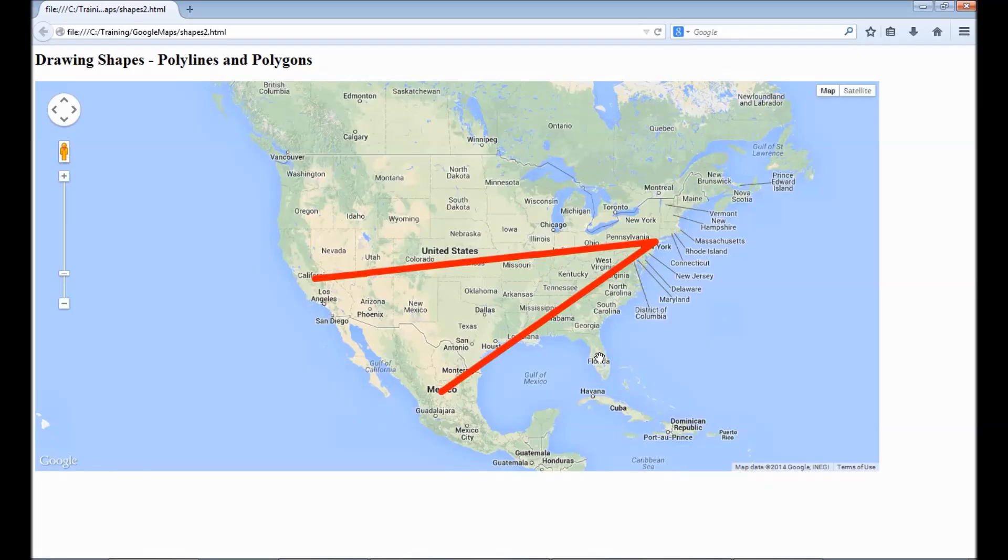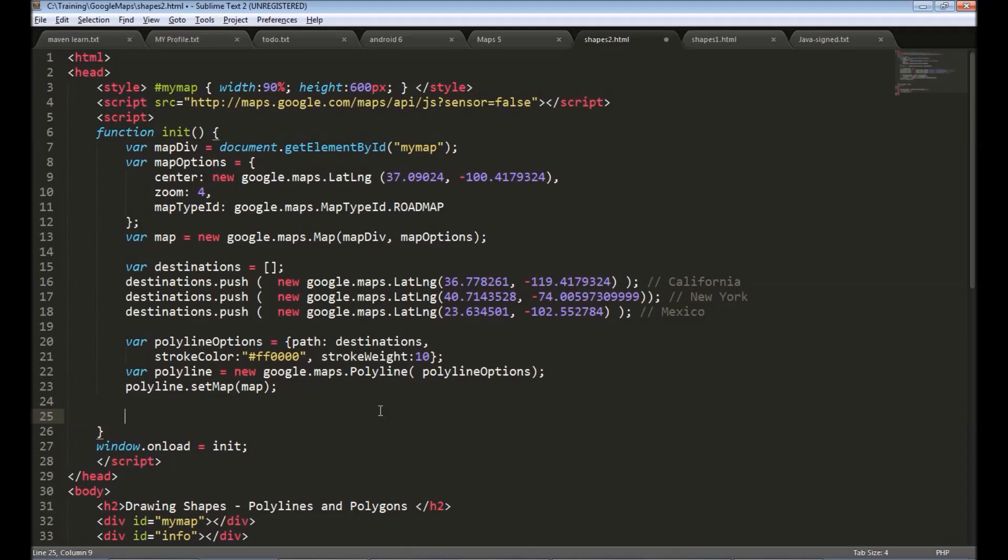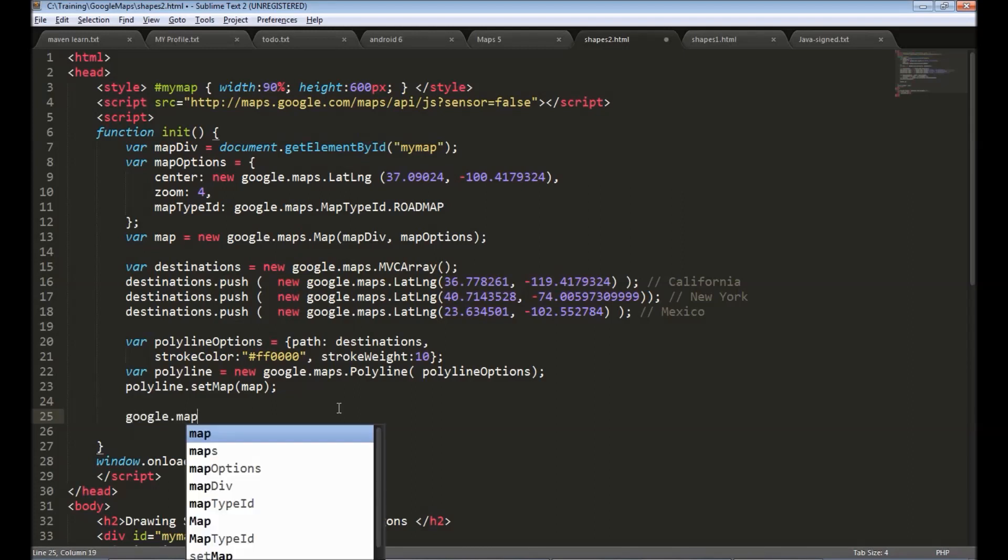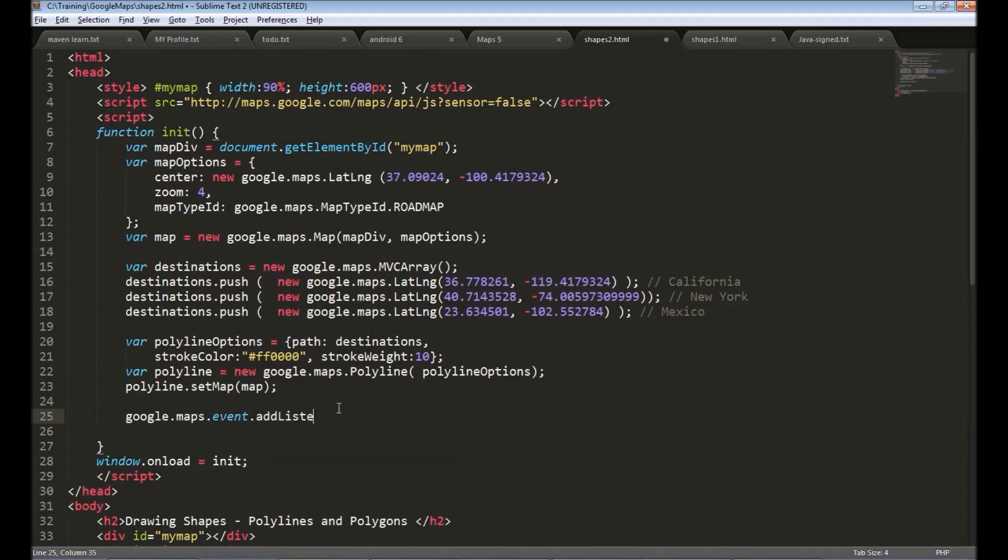Let's say we can draw a line to a particular location wherever user clicks. Say user clicks on Toronto we draw a line from Mexico Toronto or Chicago you can draw a line to that. So to do that let's get the click event on the map. Before that let's change this array to MVC array. This is similar to normal array so we can still use the push and push some lat long objects. Next is we will set a onclick event on map that can be done using google.maps.event.add listener on the map object and the click event and the function.